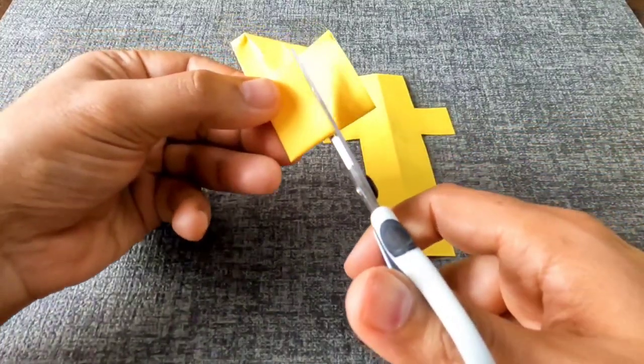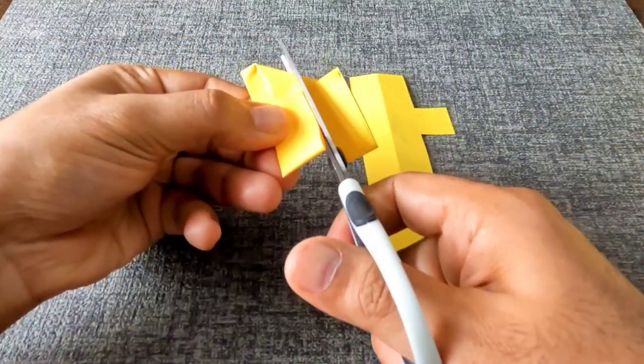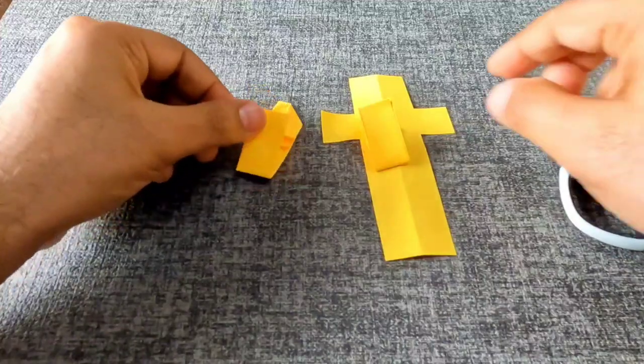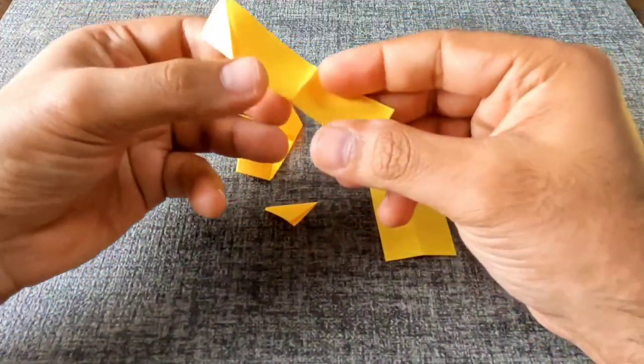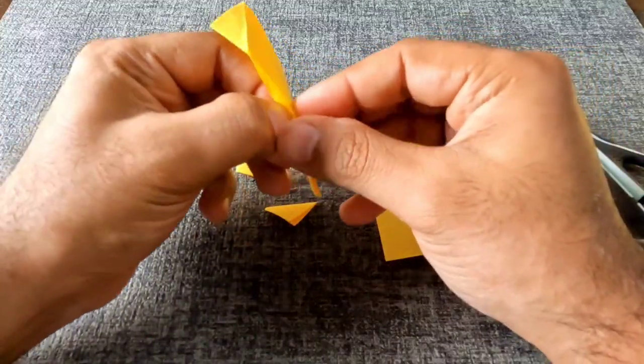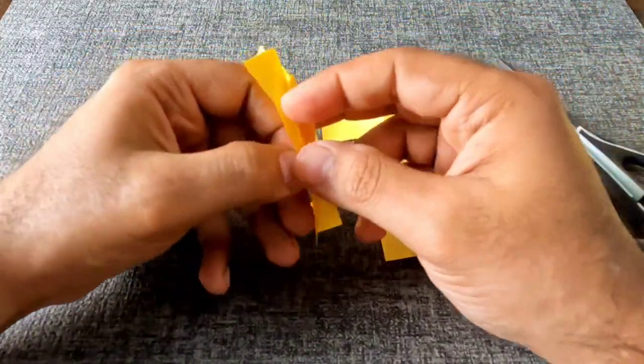Now that was all good in theory, let's verify results by making this cut. Firstly, this piece on the right looks nowhere close to the cross, but let's see what happens when we unfold. Oh, these are two separate pieces.